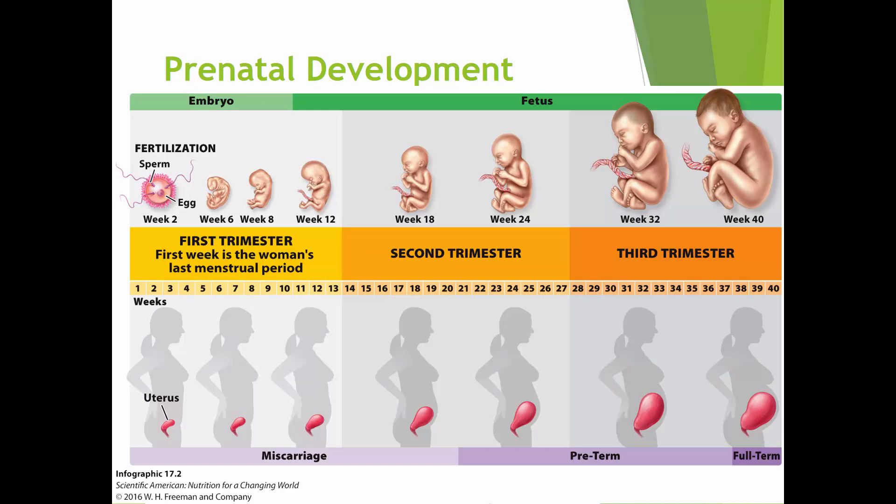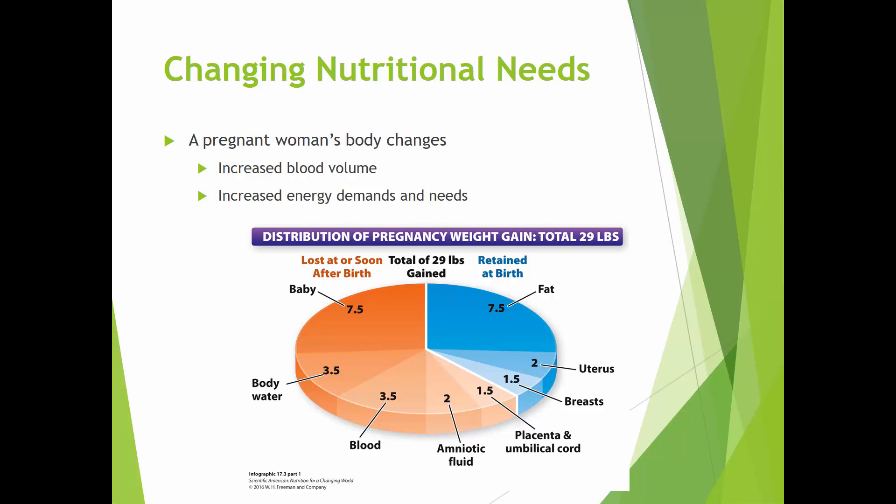A lot of things happen during pregnancy — the woman's body changes, with increased blood volume, increased energy demands, and increased needs for other nutrients. There's definitely weight gain. This chart gives an estimate; obviously everyone doesn't gain exactly 29 pounds. Some of the weight comes from the baby, body water, extra blood volume, amniotic fluid, the placenta, and the umbilical cord.